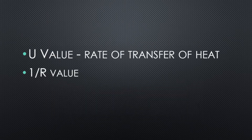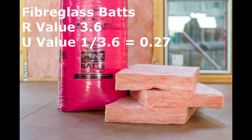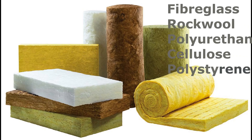Another measure of thermal insulation is the U-value, though it is simply the inverse of R-value. A good insulator will have a high R-value and a low U-value. For example, fiberglass batt has an R-value of 3.6 and a U-value of 1 divided by 3.6, which is approximately 0.27.